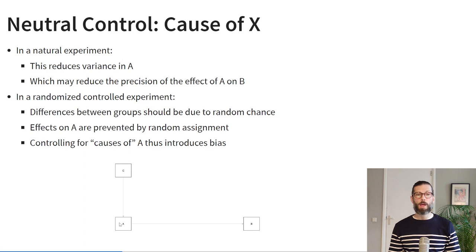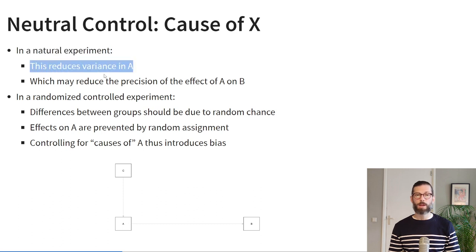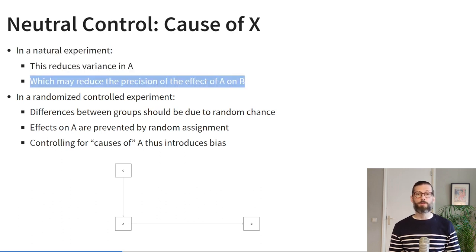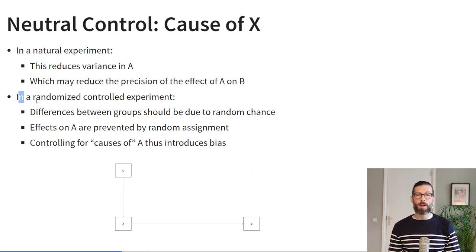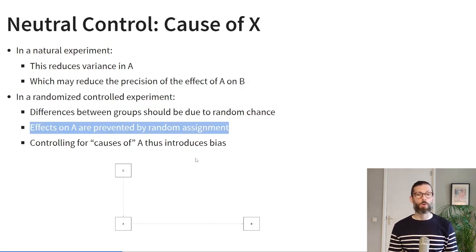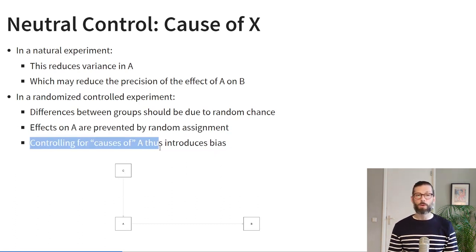Here's another situation involving a neutral control: when the third variable C is a cause of the intervention variable A. In a natural experiment, controlling for C will reduce the variance in A, which may reduce the precision of the effect of A on B. In a randomized controlled experiment, any causal effect of C on A is prevented by random assignment, and if you still see a residual effect, it's due to chance — controlling for such causes of A in an experiment will introduce bias. So if C only causes A, you should not control for it in a true randomized controlled experiment.